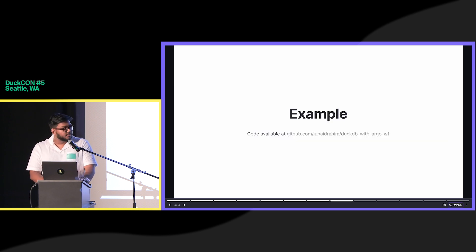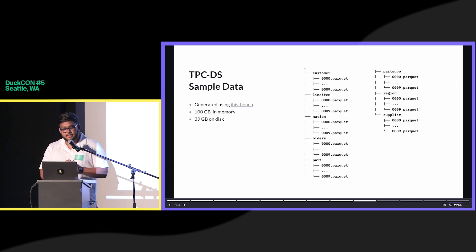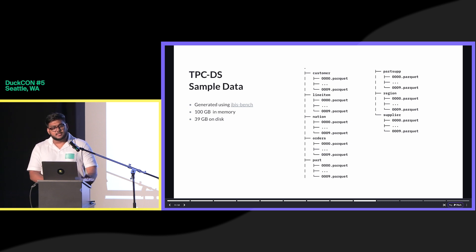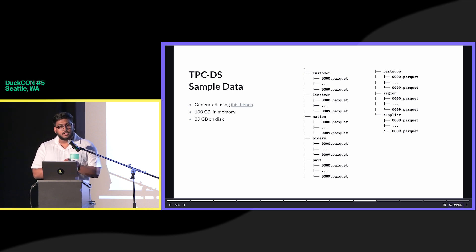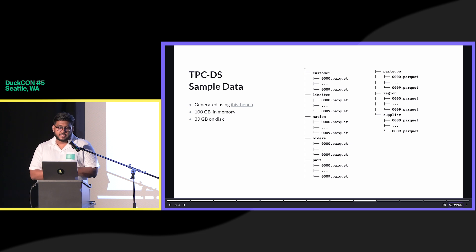Let me go through an example. The data is a derivation of the TPC-DS dataset — I generated this using DSBench. It's around 100 GBs in memory, and after compression into Parquet files it's around 39 GBs. As you can see, this data is partitioned — you can think of it as any Hive-partitioned dataset.